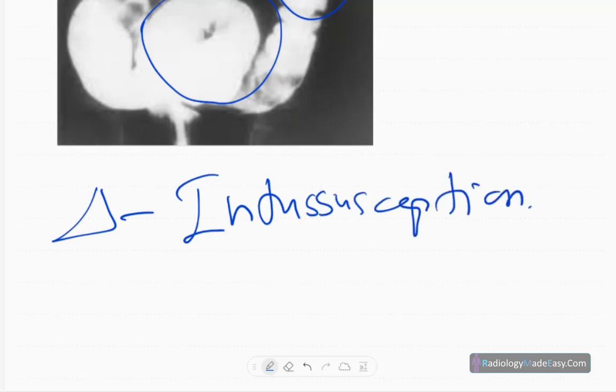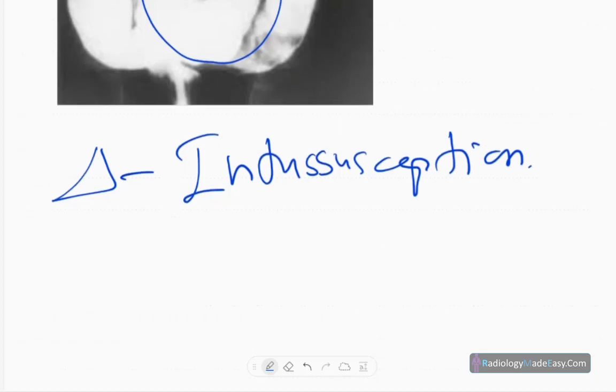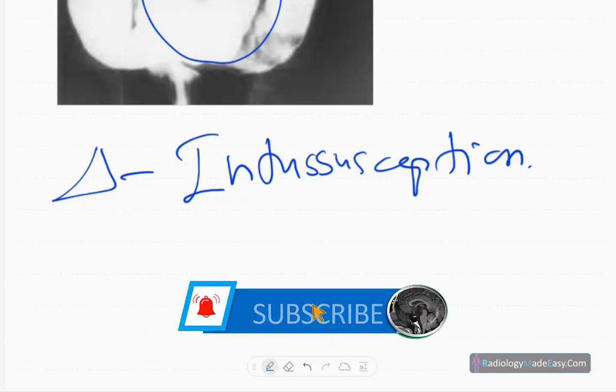It's a colocolic intussusception. In children, this type of intussusception is common between three months to three years of age, and usually there's no leading point in children, so no identifiable cause.